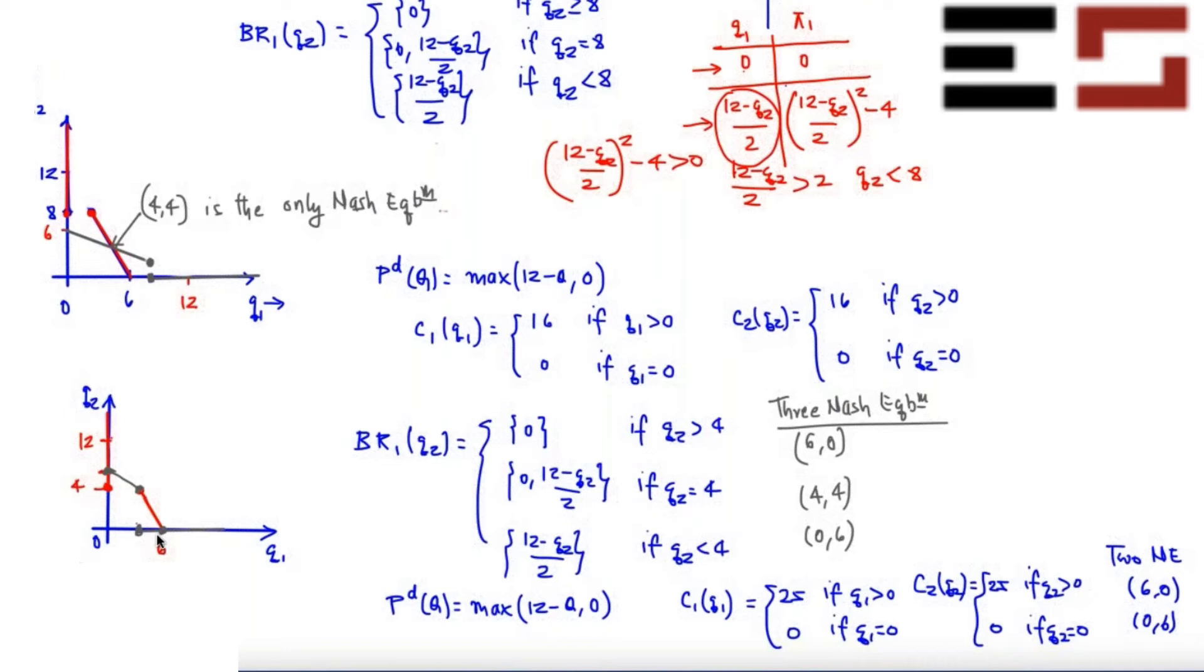Six basically, six will be the output and six will be the price. That's the monopoly equilibrium. And that is exactly what we are getting here.